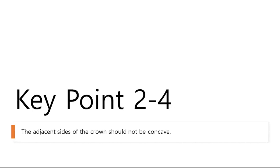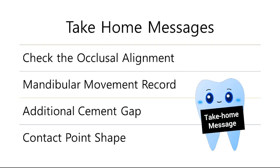Adjacent sides of the crown should not be concave. To summarize: the process of designing a zirconia crown starts with preparing the tooth and checking for any errors made during scanning. If there is a problem with the occlusal alignment, it can be corrected to some extent, although not completely, by software. Mandibular movement records will produce more meaningful results than articulators. Giving the line angle an additional cement gap will result in a uniform and thin cement gap. The contact point design should not be concave, and if the adjacent teeth are not flat, the dental technician is advised to communicate with the dentist to create the crown.